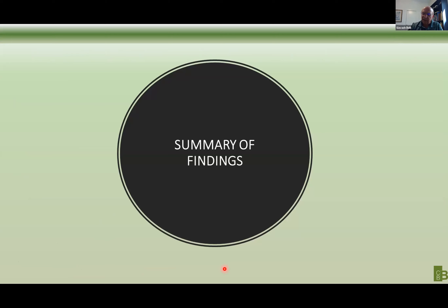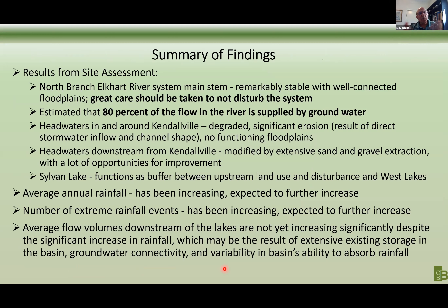Let's summarize our findings before we go to recommendations. Bob did the site assessments and the result tells us that the North Branch Elkhart River main stem is remarkably stable and very well connected with flood plains. Great care should be taken not to disturb the system, because that really triggers a chain reaction that would undo the resiliency in the system. We estimate about 80% of the flow in the river is supplied by groundwater — a very significant factor that tells us the type of strategies in this system could be different than your normal system.